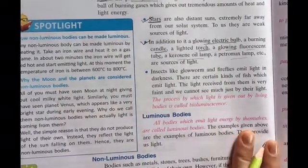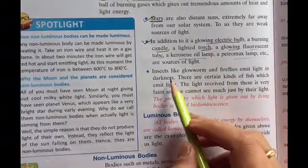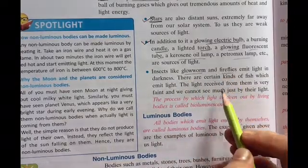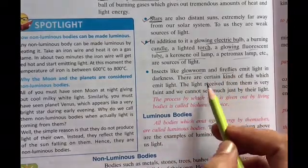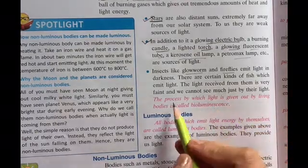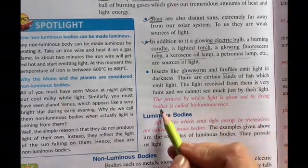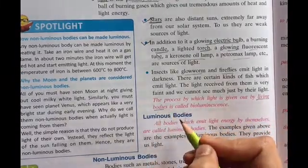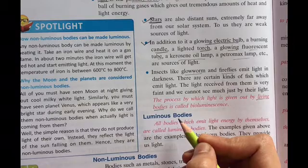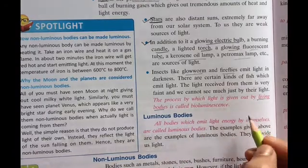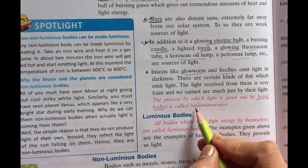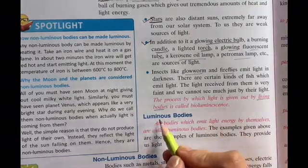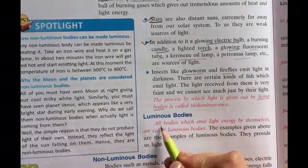Along with that, there are some other things like we have insects like glowworm, fireflies, and fishes which generate light. So the process by which light is given out by living bodies, living animals, insects that are alive - if they give us light, that is called bioluminescence.